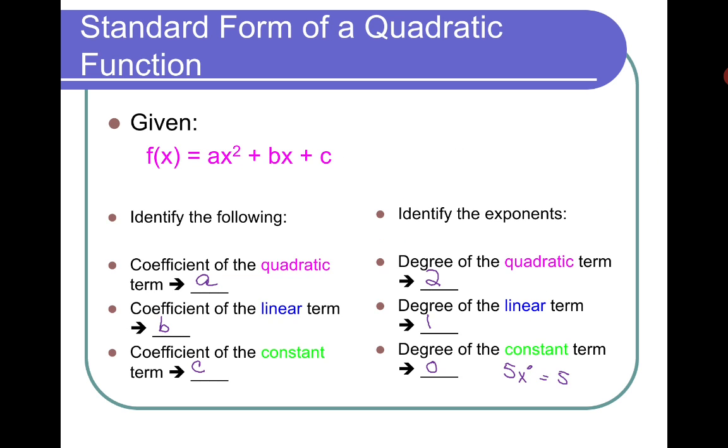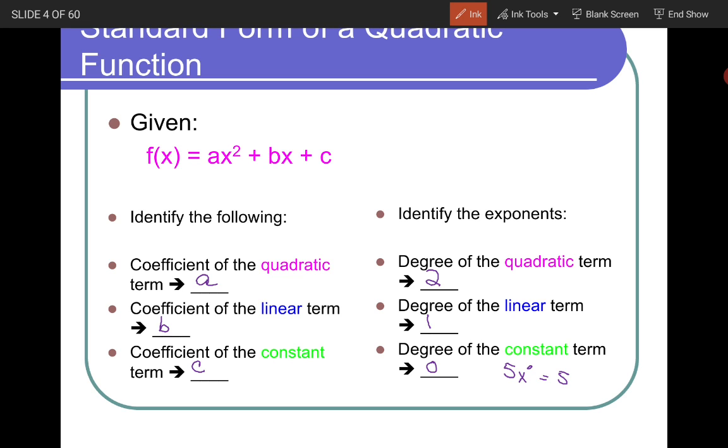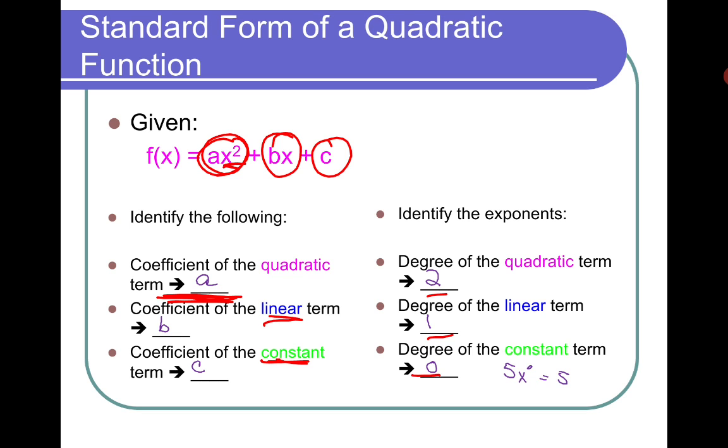I think these are pretty straightforward things like the coefficients a, b, and c. Just to kind of throw in there, just for you to remember that this a is for the quadratic term because it's the second, and then the linear term x, and the constant is just the c itself. So just to kind of recap what the degrees are.